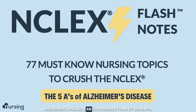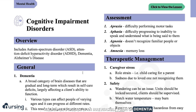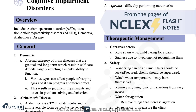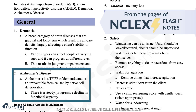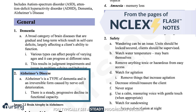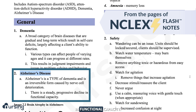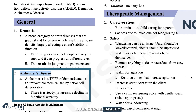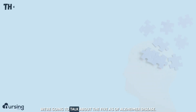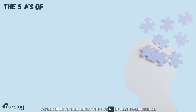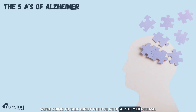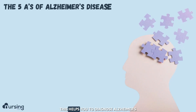Alzheimer's disease is an irreversible form of dementia that is caused by nerve cell deterioration. You typically see a steady progressive decline in functional capacity. We're going to talk about the five A's of Alzheimer's disease.